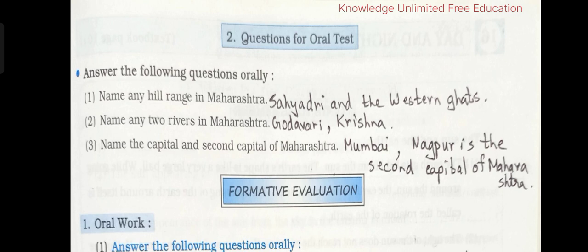Questions for oral test — answer the following questions orally. 1. Name any hill range in Maharashtra. Sahyadri and the Western Ghats. 2. Name any two rivers in Maharashtra. Godavari, Krishna. 3. Name the capital and second capital of Maharashtra. Mumbai is the first capital and Nagpur is the second capital of Maharashtra.